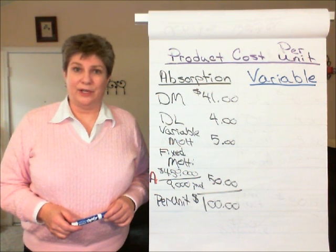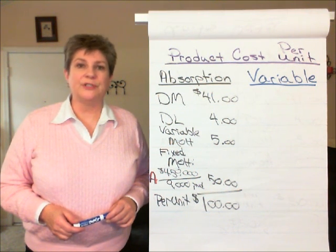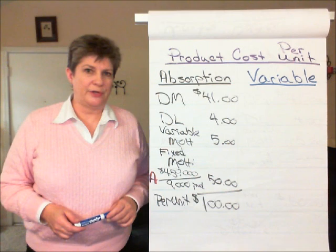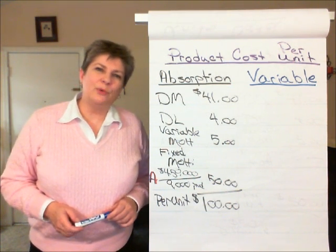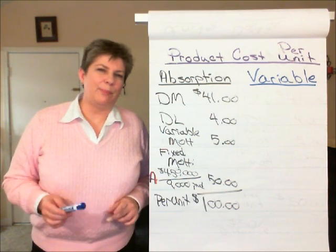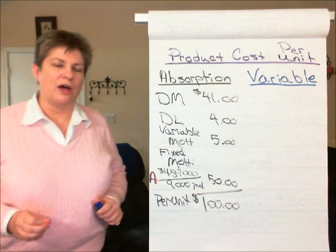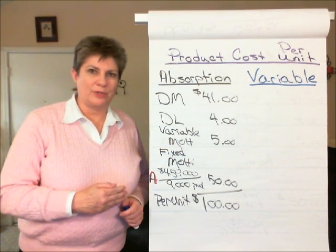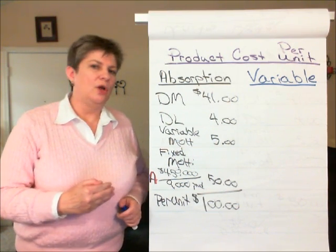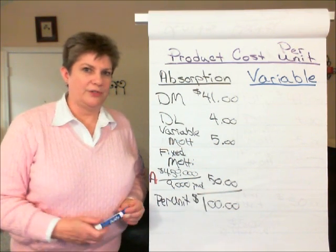Managerial accounting: absorption costing versus variable costing. The first thing we're going to do is compare the product cost per unit under absorption costing with that of variable costing.